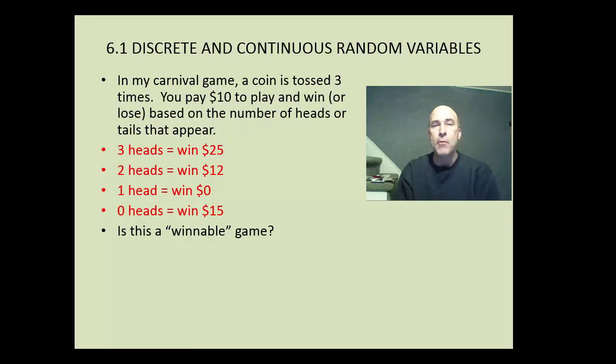We're going to look at the mean and standard deviation of random variables to assess whether games are fair. So if you look at the example we have here, we have a carnival game where a coin is tossed three times. I have my coins here. You pay $10 to play and win or lose based on the number of heads or tails that appear. So if I'm able to flip the coins and I get three heads, I win $25. If I get two heads, I win $12. One head, I win nothing. And zero heads, I win $15.